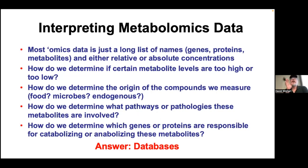What we normally get when we do genomics, proteomics, transcriptomics, microbiomics, or metabolomics is a list of names — genes, proteins, metabolites — and their relative values, concentrations, something: a name and a number.